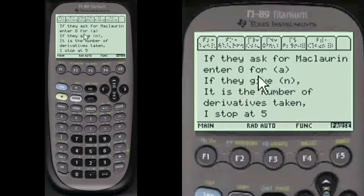I'll tell you a little bit about the parameters of it. For instance, McLaren is when you enter zero for A in the formula, and N is the number of derivatives that you take. One of the things for Taylor series and McLaren is that you have to have repeating derivatives.